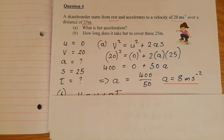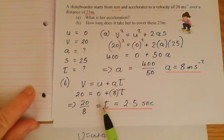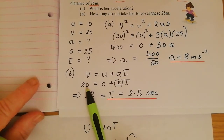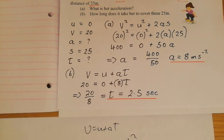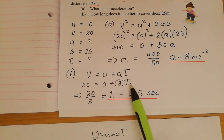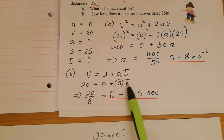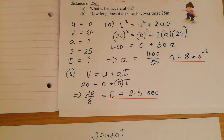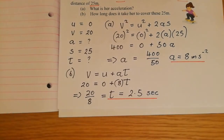For the time, I use v = u + at. Now I know v is 20, u is 0, and a is 8. So 20 = 0 + 8t, therefore t = 20 / 8 = 2.5 seconds. Remember it's all about choosing the right formula — think about which variables you know and which you need.